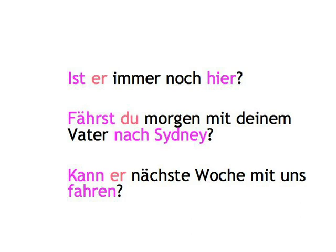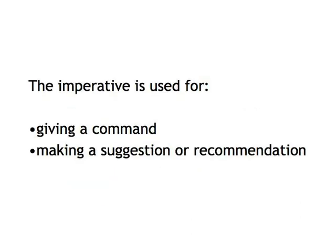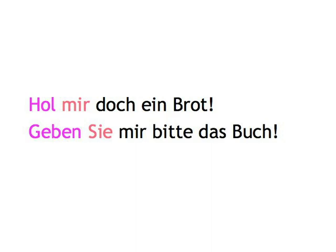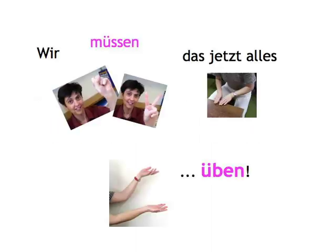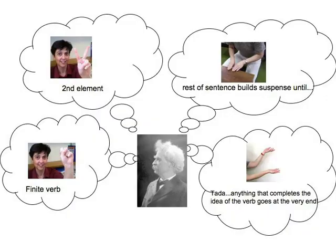The imperative form — giving a command, making a suggestion or recommendation — is the other instance where a main clause starts with a verb: 'Hol mir doch ein Brot,' 'Geben Sie mir bitte das Buch.' That's about it. So — 'Wir müssen das jetzt alles üben' — we have to practice everything, and practicing the drumroll will be fun. Promise.